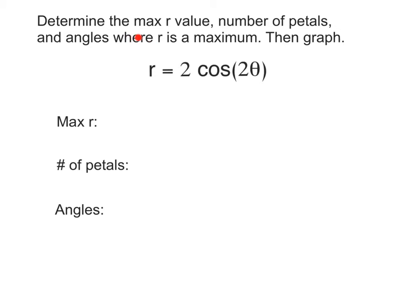Here we go. Determine the maximum r value, number of petals, and angles where r is a maximum, then graph. First, let's start with our max r value. This is always going to be your a, or that number right in front, in this case, two.